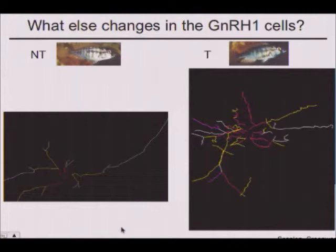Going from NT to T, this whole thing can take as little as two and a half days. Going from T to NT, the males try to hang on to their gonads by pretending they're still dominant, and they can do that for about two weeks — but then it's over, and they've got to go back to the status.